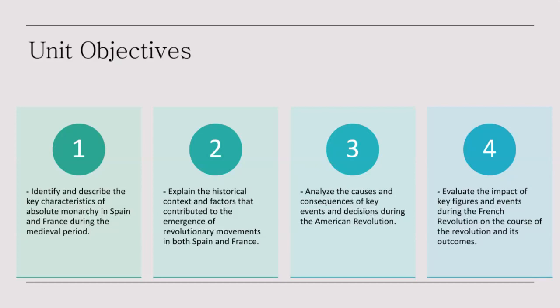Finally, we will evaluate the impact of key figures and events during the French Revolution on the course of the Revolution and its outcomes. The French Revolution, which began in 1789, was marked by radical political and social upheaval. The Committee of Public Safety ushered in the Reign of Terror, a period of intense political repression. Napoleon Bonaparte emerged as a central figure during this tumultuous period, eventually crowning himself emperor. His Napoleonic Code left a lasting impact on France and its legal system, and his military campaigns reshaped the map of Europe.